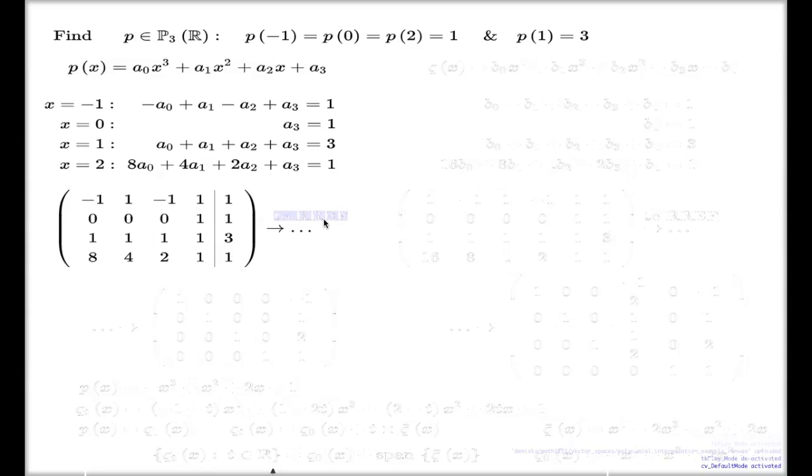So if I go to the reduced row echelon form, here's my reduced row echelon form. I didn't do this by hand, I just fed this into MATLAB or Maple actually.